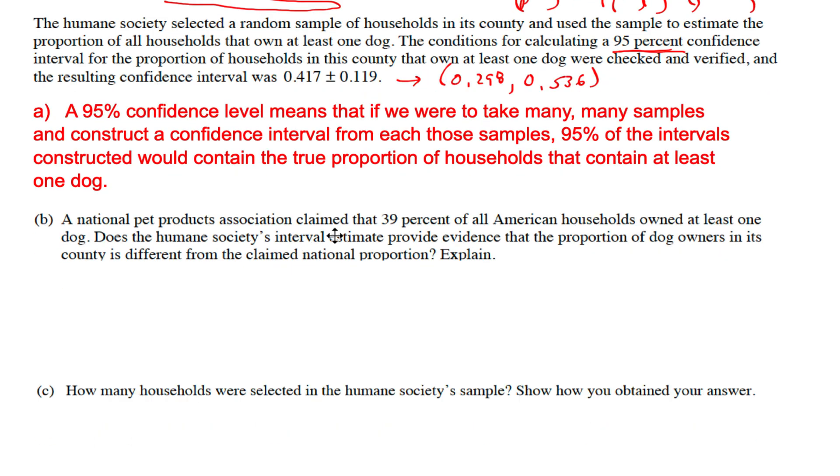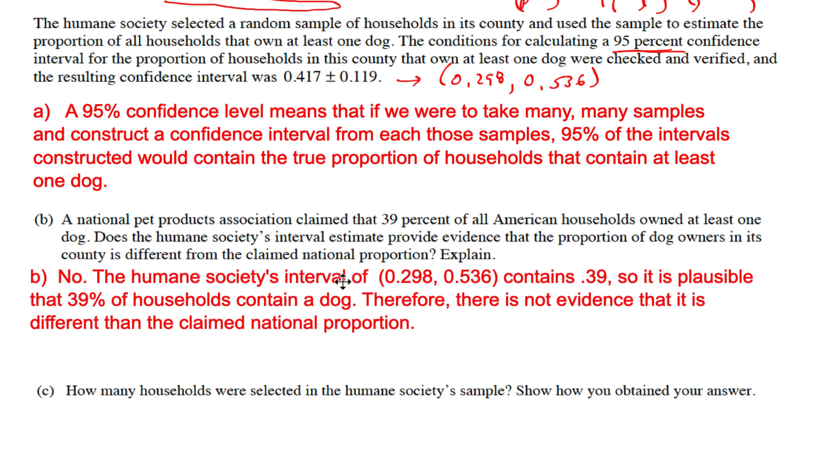Next part: a national pet products association claimed 39% of all households owned at least one dog. Looking at this interval, they are claiming that 39%, which is between 29.8 (so like 30%) and 54%. So that 39 is in the interval that we constructed. Does that make sense? It's plausible, which means it's possible that 39% is the true value.